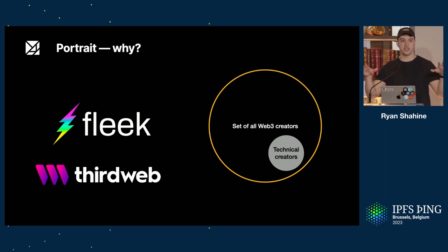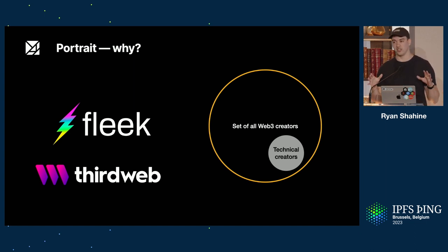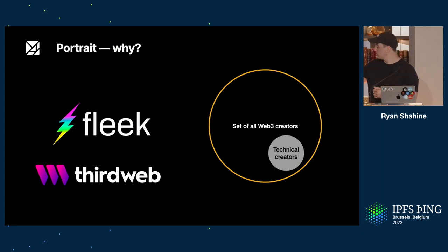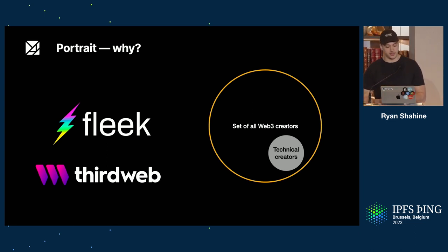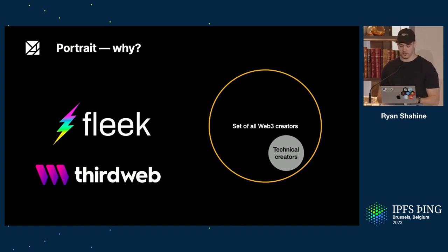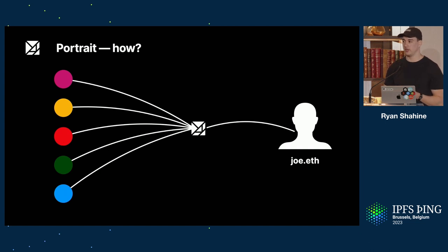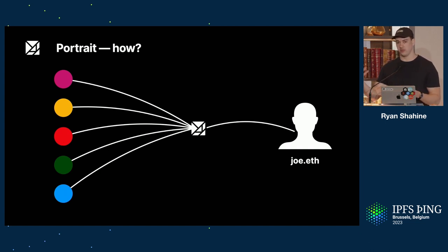What Joe likes to do is map everything to his DNS domain. And in order to do that today, Joe has to be part of the subset of Web3 creators that are actually technical — he'd have to design and code his own website and publish that either through Fleek or ThirdWeb, and then map the content hash to his DNS domain. I think everyone in this room is quite technical, but we are part of the subset of more technical individuals in the space. So for the entire set, there's no solution out there, and that's what we're building.